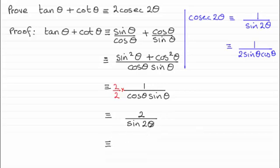So, I've got 2 over sine 2 theta. And as we've seen, 1 over sine 2 theta is cosec 2 theta. So, this is identical to 2 cosec 2 theta.